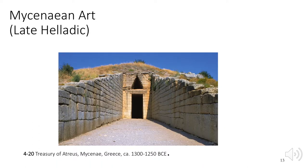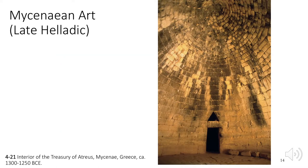Elite families buried their dead outside the citadel walls in beehive-shaped tombs covered by earthen mounds. These are called Tholos tombs. Notice the corbelled arch over the entryway. A long passageway called a Dromos leads from the doorway to the burial chamber, or Tholos. The Tholos is simply corbelled stone courses laid on a circular base to form a dome — the stones are overlapped and laid in a tighter and tighter circle until they form a domed interior.